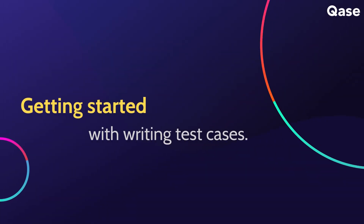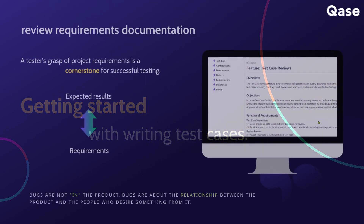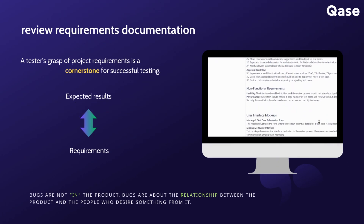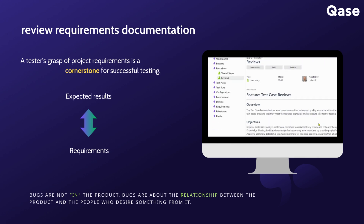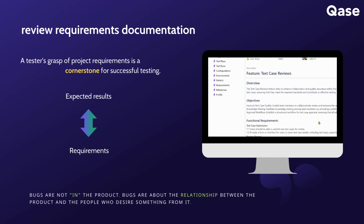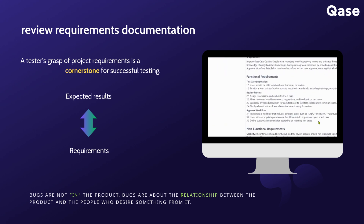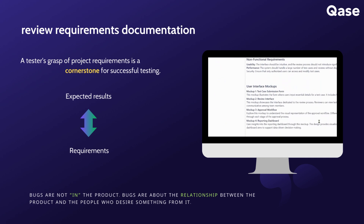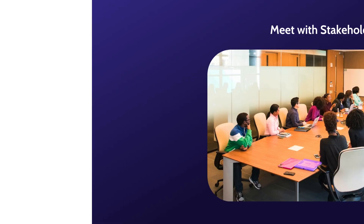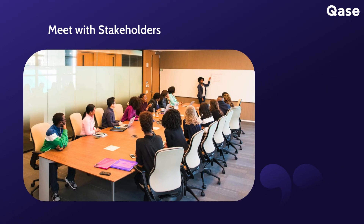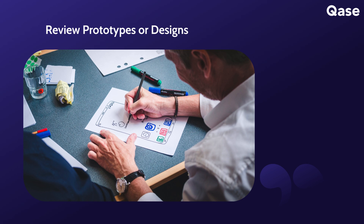Now that we've explored the why, let's discuss how you can get started with effective test case creation. A comprehensive understanding of the software features enables you to write more effective and targeted test cases. Begin by thoroughly reviewing the requirements documentation, understanding both functional and non-functional requirements, and noting any constraints or dependencies. Schedule meetings with stakeholders to gain insights into intended user behavior, and review prototypes or design documents for a visual understanding of component interactions.